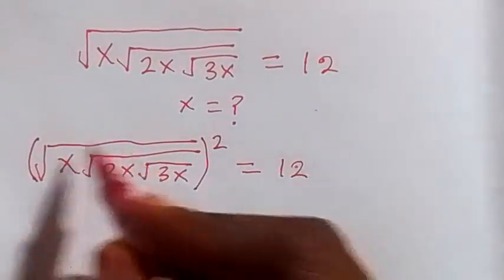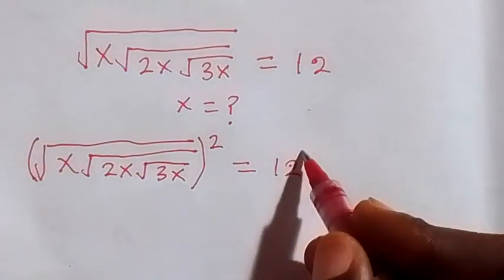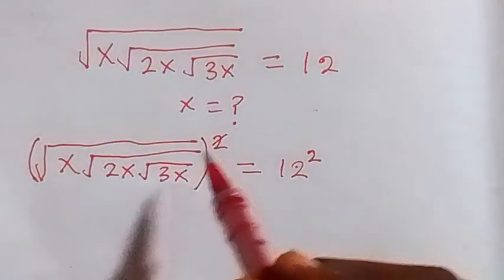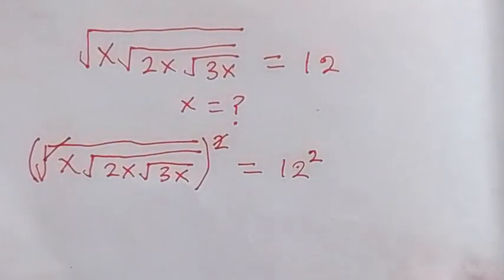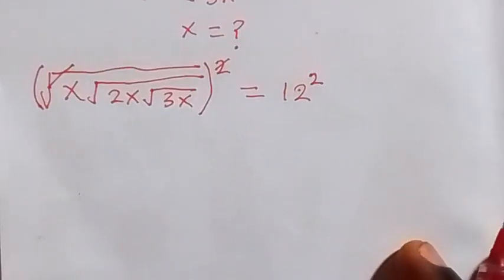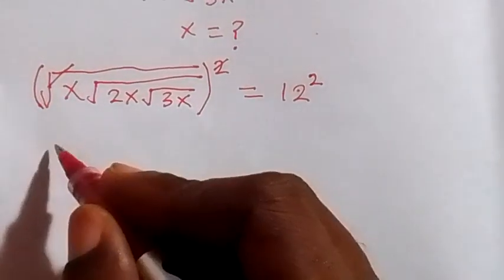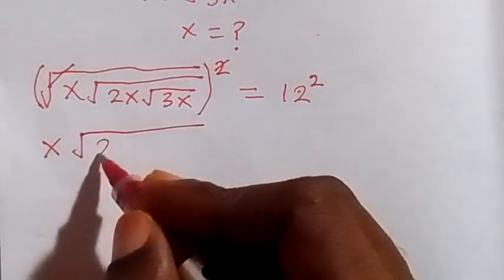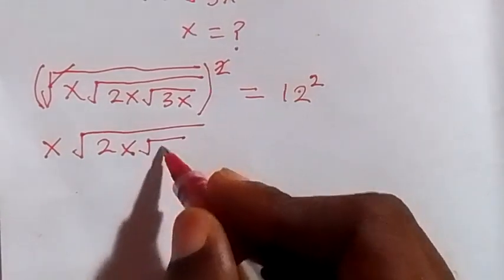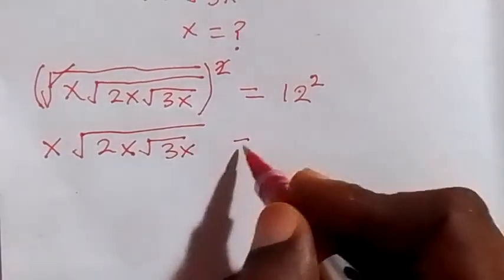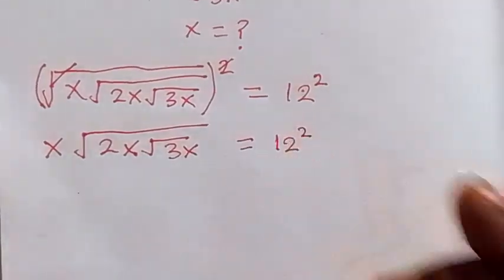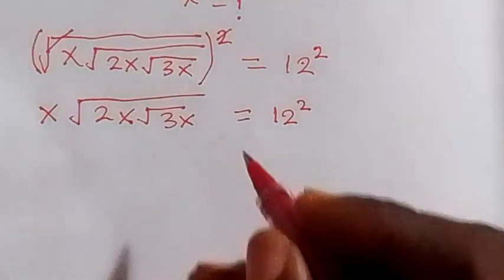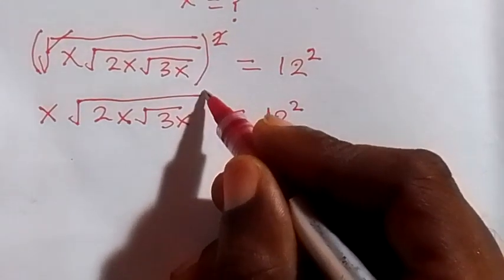Taking the square on both sides, the square cancels one of the square roots, and this becomes x times the square root of 2x times the square root of 3x, equals 12 raised to the power 2. Let's leave it like that and then square both sides again.